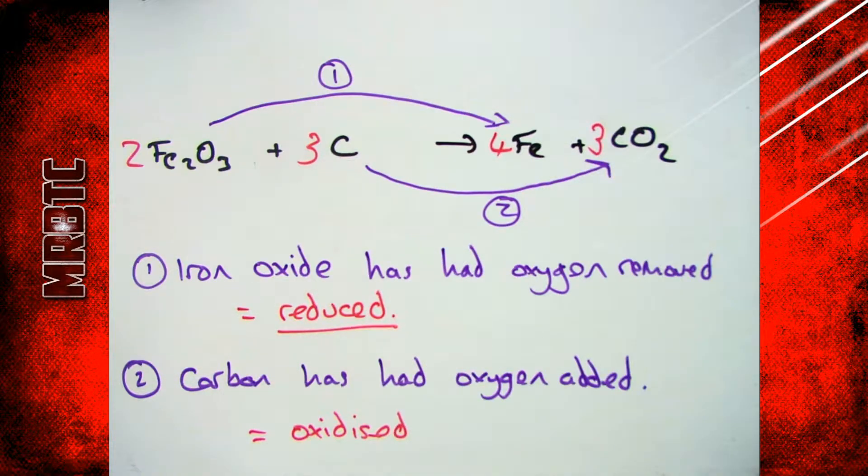You can see that with the balanced equation here, so I've got Fe2O3 plus 3C goes to 2Fe plus 3CO2. So my Fe on the left hand side, my iron oxide, has lost oxygen and become Fe, just on its own, and carbon, C on its own, has gained oxygen to become CO2, therefore that has been oxidized.